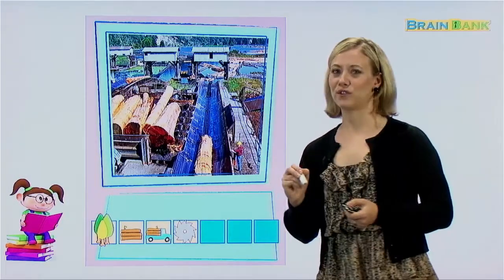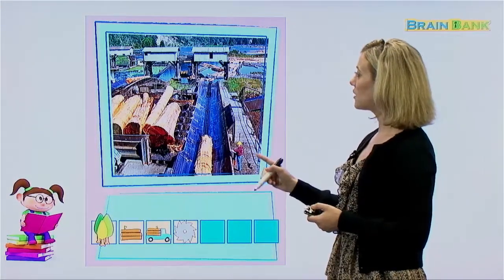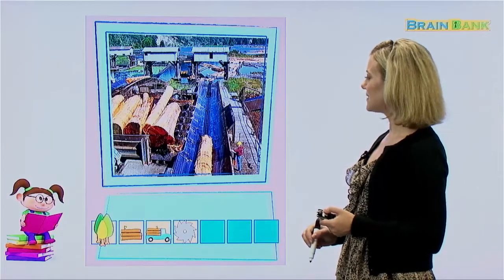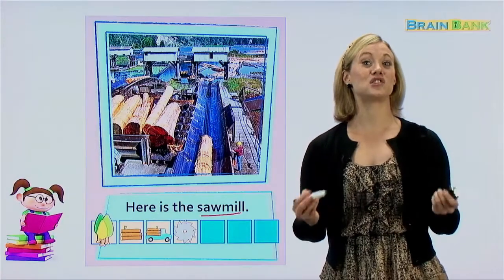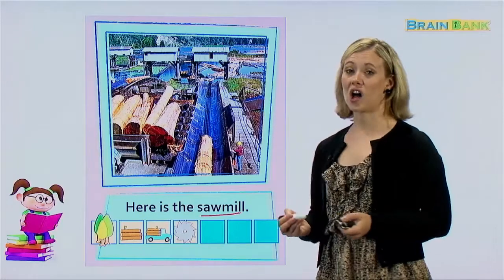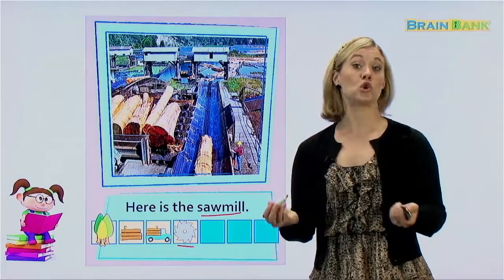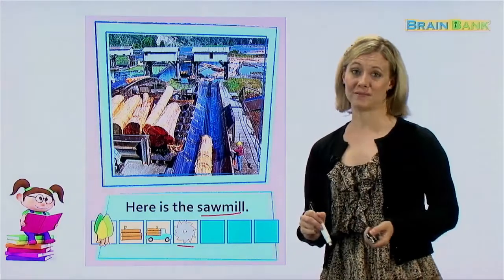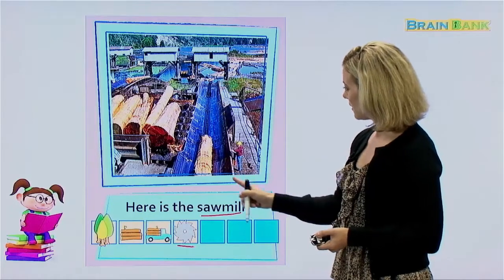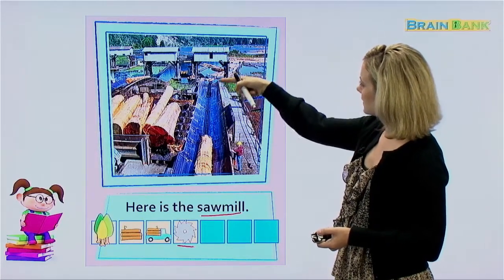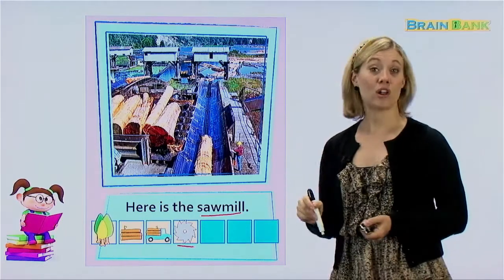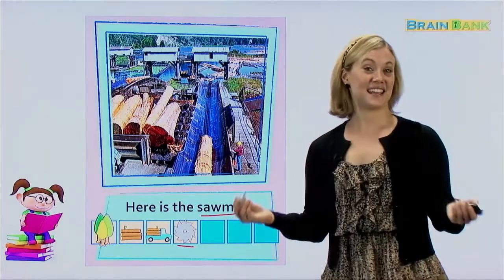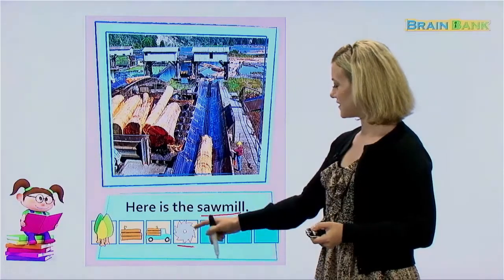This is a special place where the logs are cut. They are cut into wood that can be used to build the house. We call this place a sawmill. Can everybody say sawmill? Sawmill. Now, a saw — you might know — kind of looks like this. It's a tool, and it's very sharp, and it's used for cutting things. It's used for cutting wood. So this is a very large saw. The logs go through here and they are cut. Over here we can see some smaller logs that have already been cut. Here is the sawmill. That is step number four.